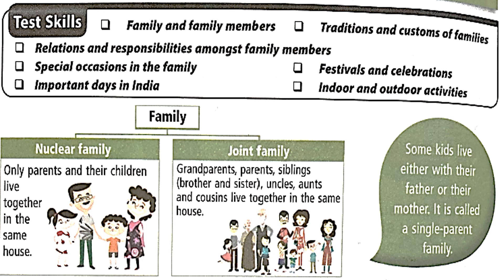Let's see how many kinds of families there are. Broadly, it is divided into two types. One is nuclear family, where only parents and their children live together in the same house. The other one is joint family, where grandparents, parents, siblings, brothers and sisters, uncles, aunts and cousins all live together. Some kids live with either their father or their mother — it is called a single parent family.